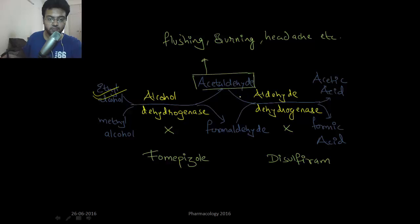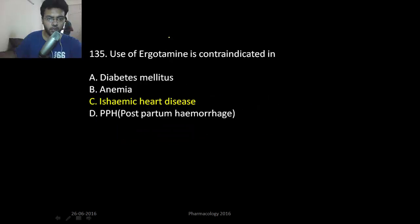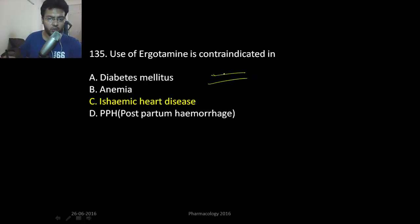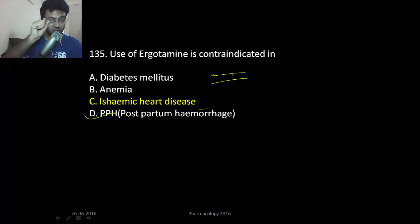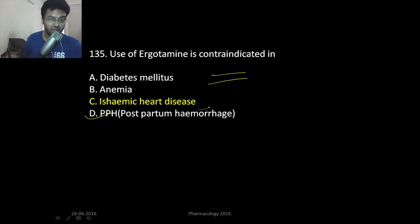Ergotamine works on alpha receptors. Alpha-1 receptors are present in vessels, and on stimulation of that alpha receptor there'll be vasoconstriction, which is helpful in migraine and postpartum hemorrhage. But if a patient has ischemic heart disease, you constrict the coronary vessel and they'll have a myocardial infarction — so it's bad for ischemic heart disease.